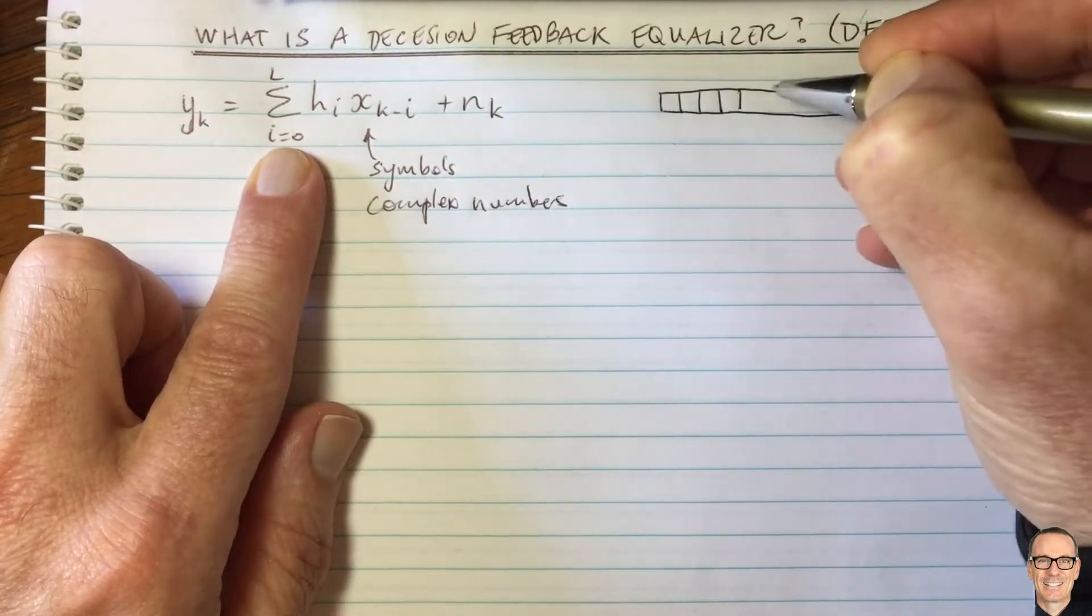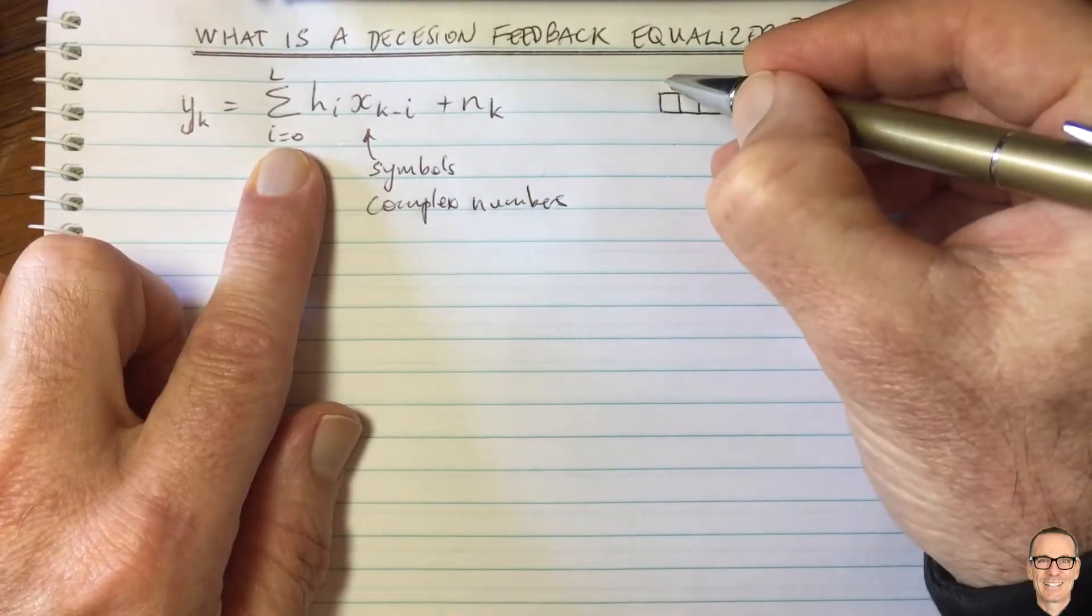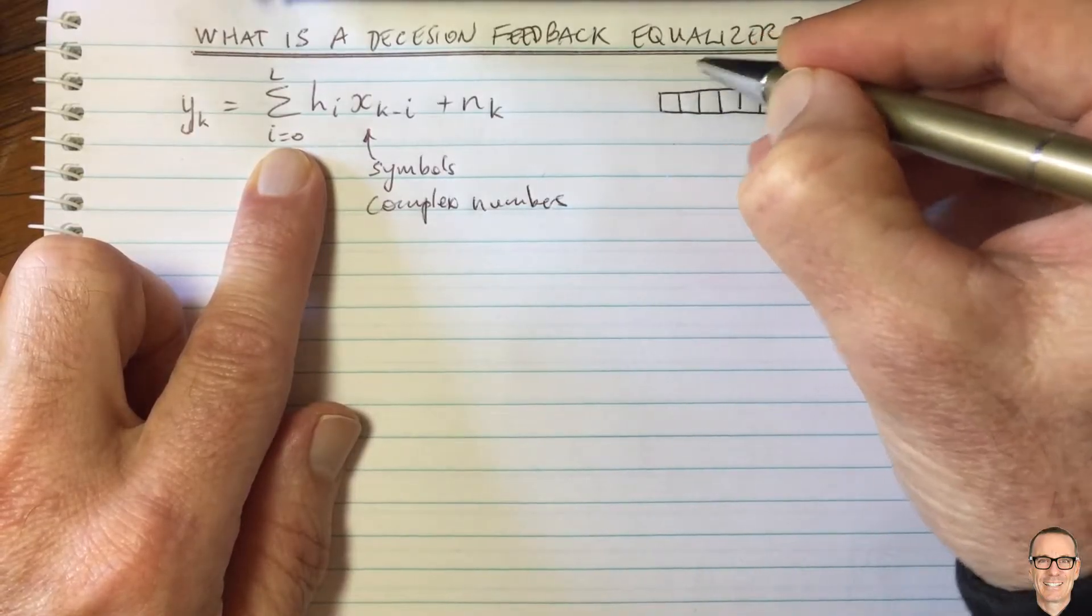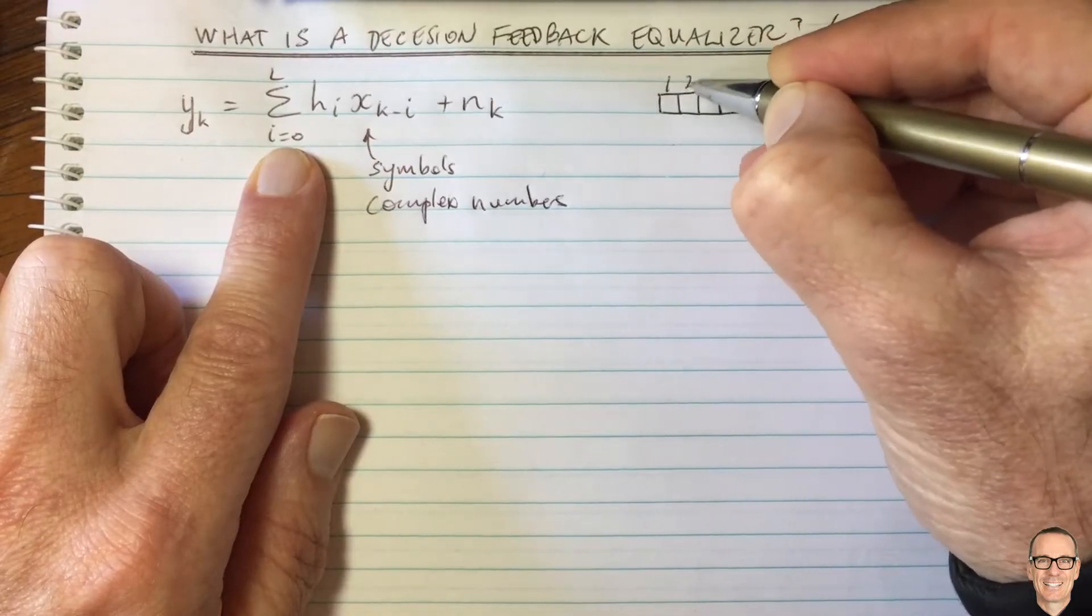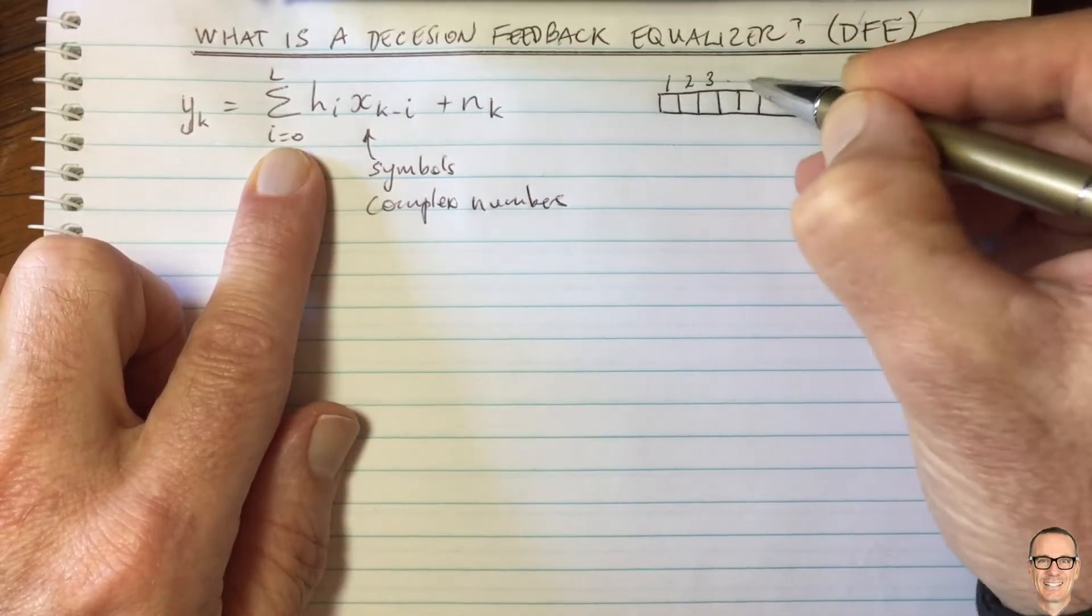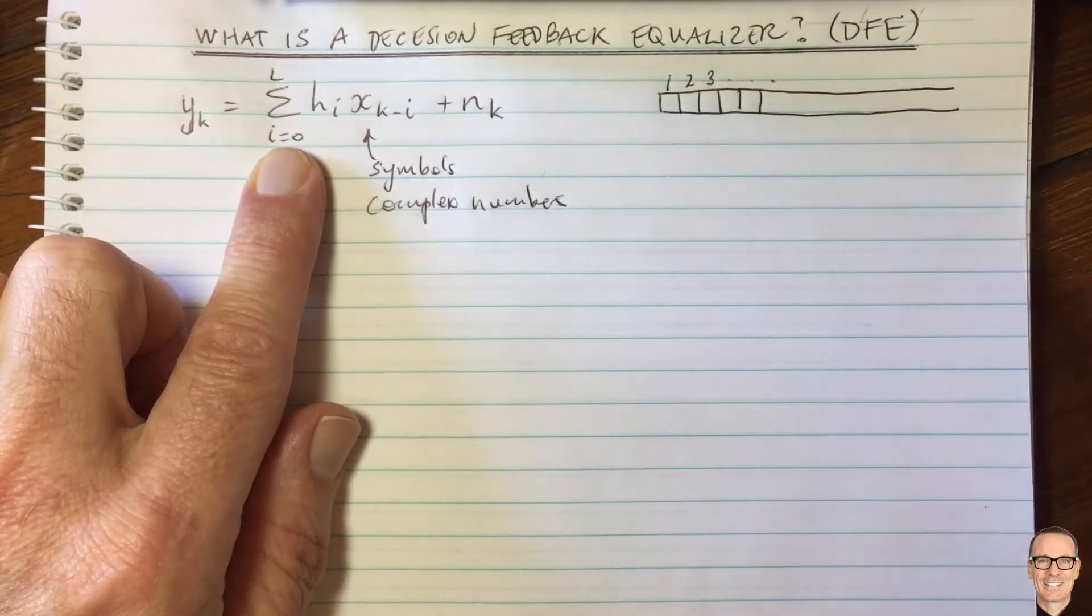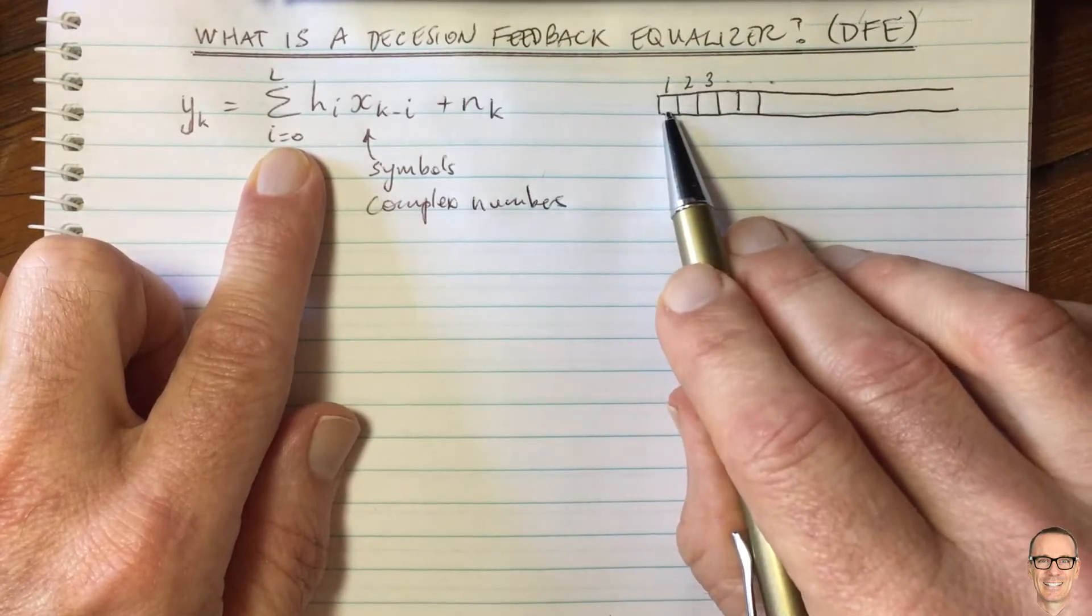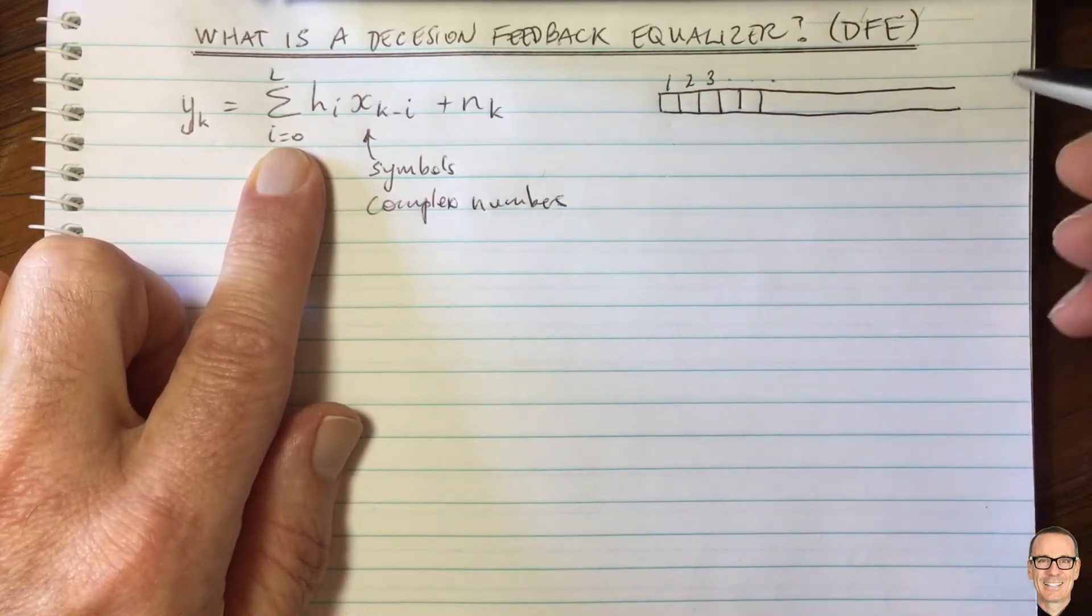And so each of these I think of these symbols as being in these boxes and this would be time zero or let's say call this time one and time two and time three and so on. And this is a data sequence or a symbol sequence of complex numbers which are being modulated and then sent as symbols. So this is the sequence x.